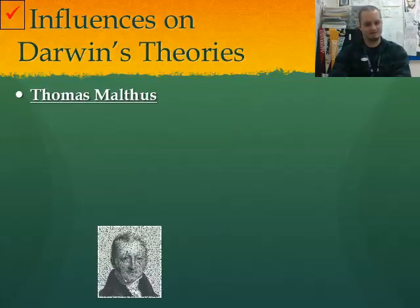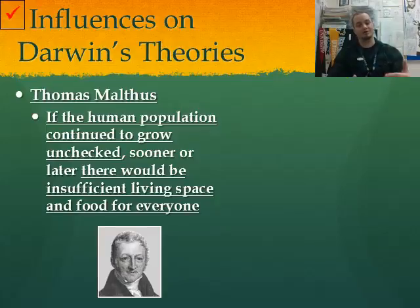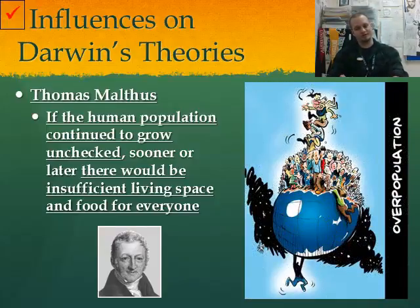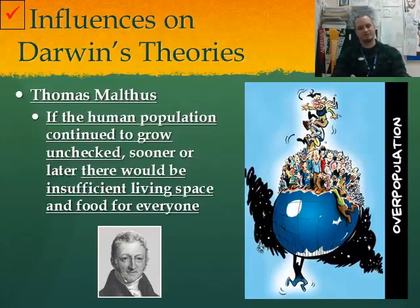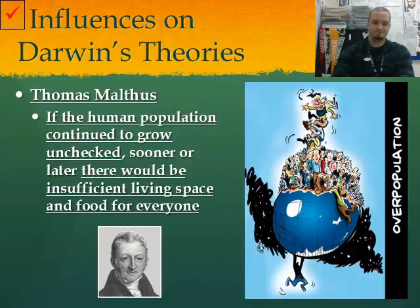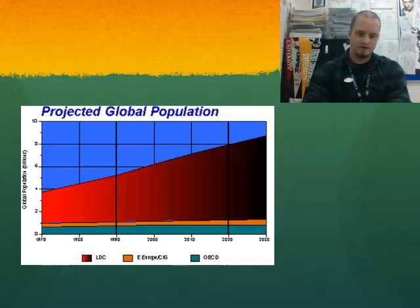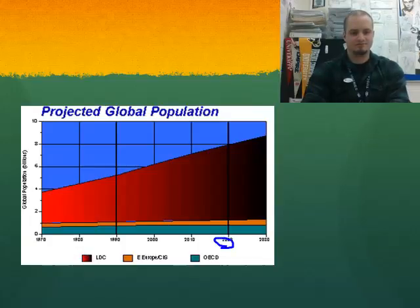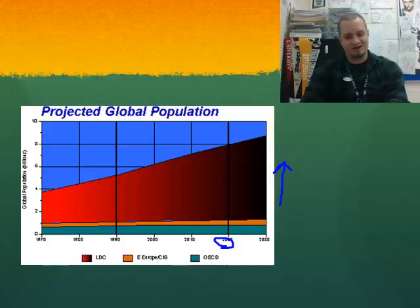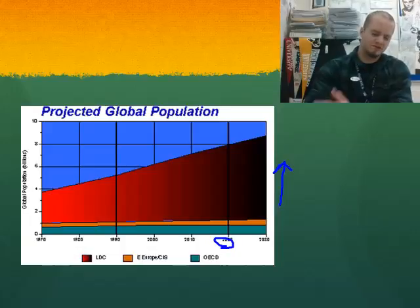Another influence was Thomas Malthus. Malthus stated that if the human population continued to grow unchecked, sooner or later there would be insufficient living space and food for everyone. He argued that we have to compete for resources such as food and shelter. If there's nothing to stop a population from growing, over time it will gradually use up all the resources it has until it eventually becomes extinct. Looking at a chart of the projected global population approaching 2020, the population seems to be increasing — so unless something happens, we might actually run out of food and shelter.